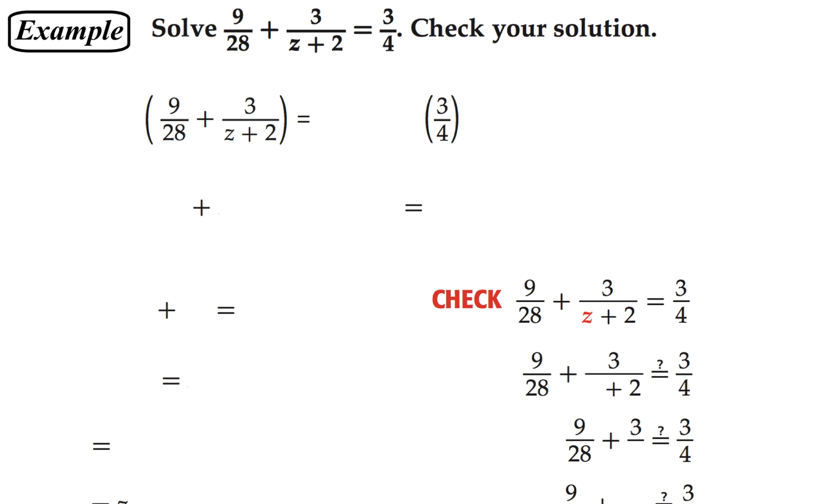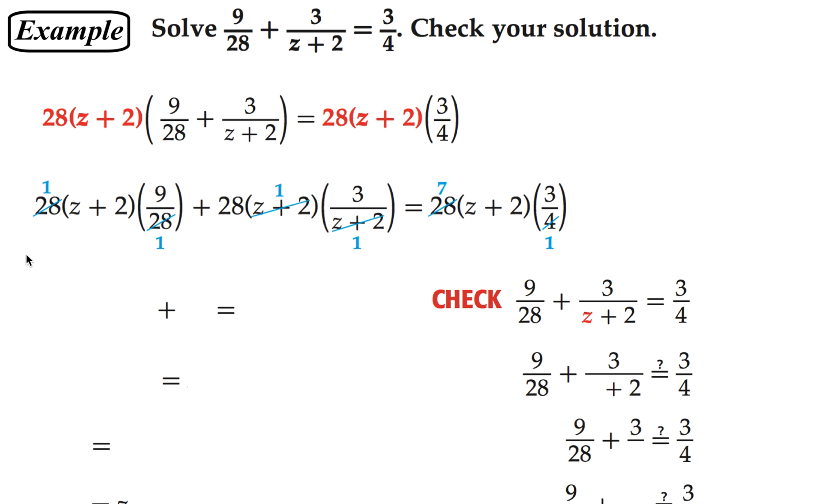So we're going to multiply both sides of our equation by that least common denominator, and then distributing that, we're going to multiply every single term by 28 times z plus 2. So I have my first term, the 28s cancel, and I have 9 times z plus 2, which will give me 9z plus 18.